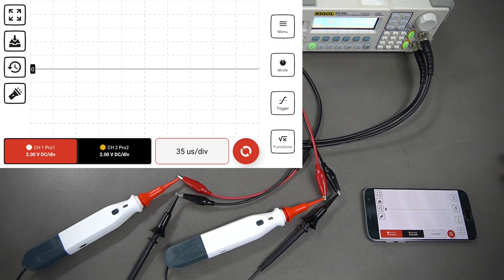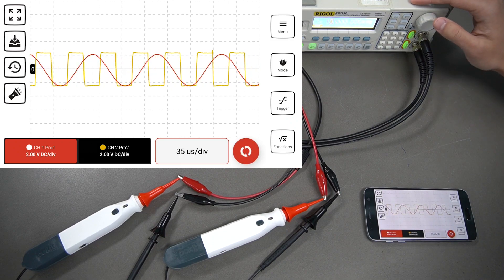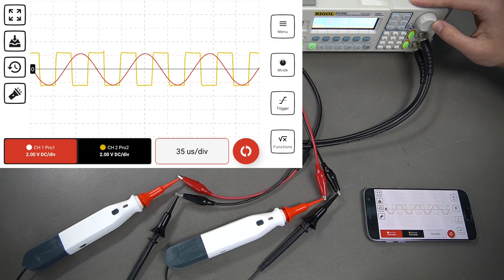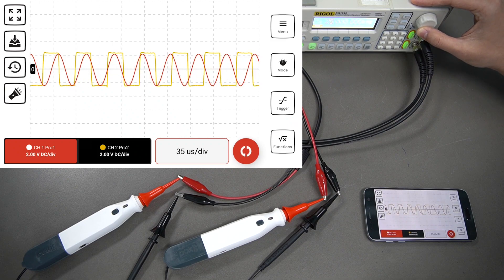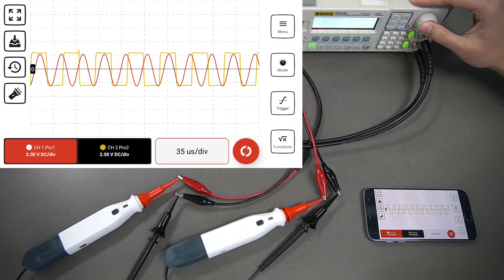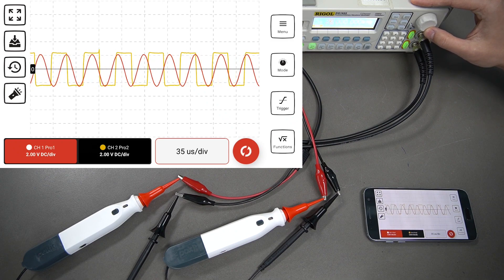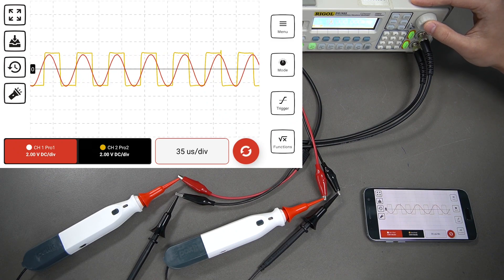You can put it into free run here. This is going to give you a continuous update of the waveform. If I change the voltage going in, you can see that waveform changing there, so that channel 1 is changing.